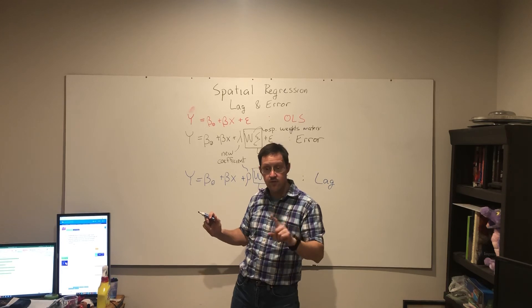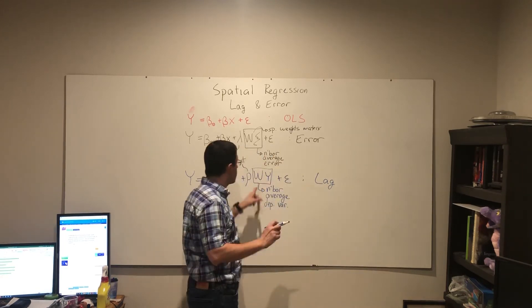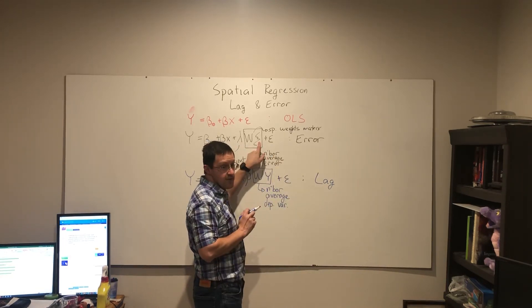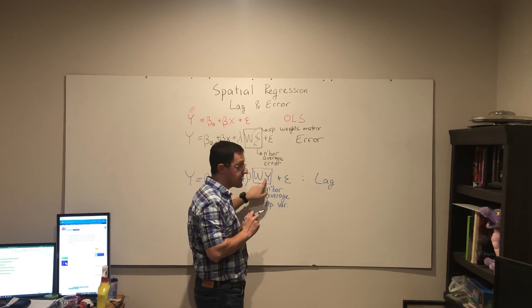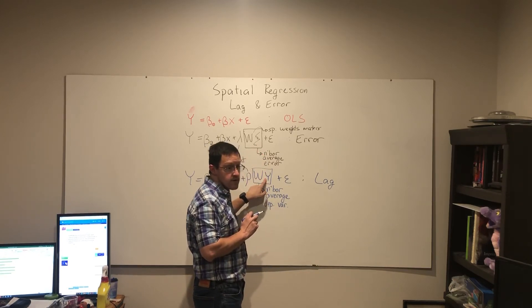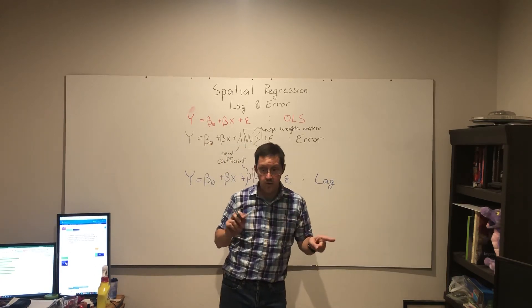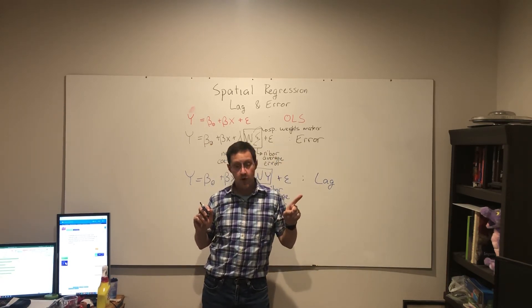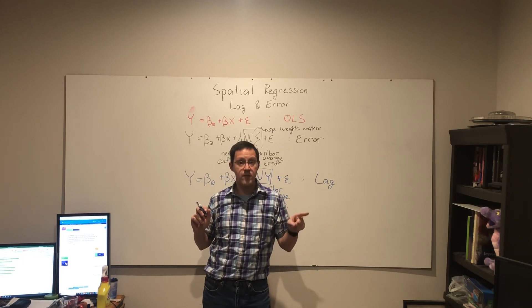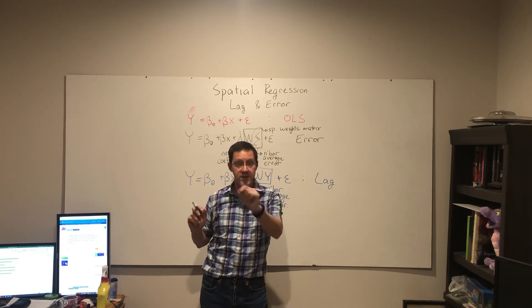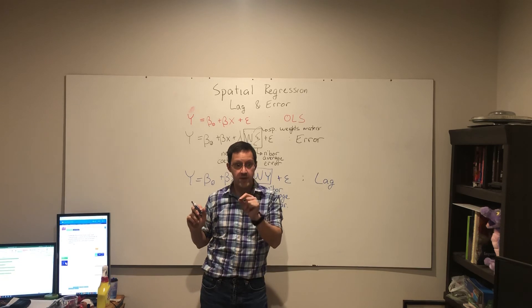So these two, the difference here, based upon the error term or based upon the dependent variable illustrates we use the error regression when we are assuming or hypothesizing missing data or missing processes affecting the dependent variable.